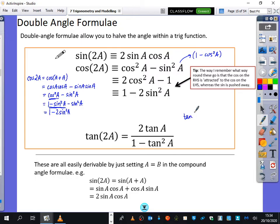well, we would have the tan of A plus A is equal to the tan of A plus the tan of A divided by 1 minus tan A tan A. So the numerator is 2 tan A, and the denominator is 1 minus tan squared A, which is what we've got here.